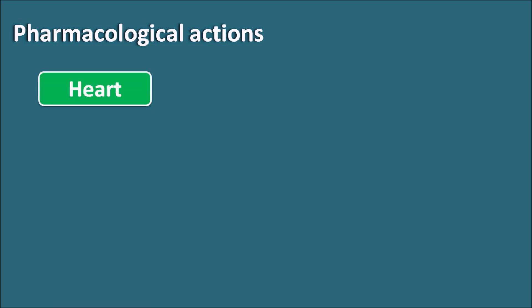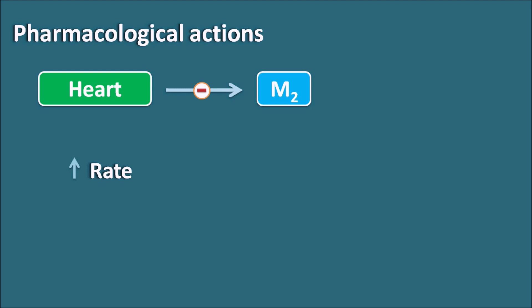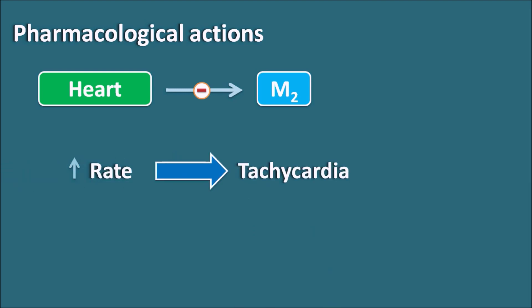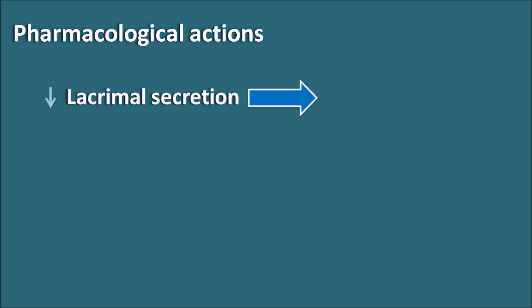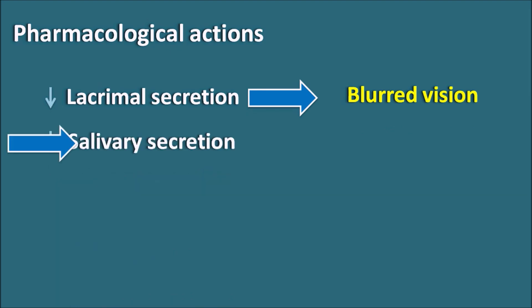Another important organ is the heart. On the heart, M2 receptors are present. Dicyclamine can block these M2 receptors, which results in an increased rate of contraction. So Dicyclamine can produce tachycardia, palpitations, awareness of heartbeat, and tachyarrhythmias because of block of M2 receptors. Dicyclamine can also reduce exocrine secretions — it decreases lacrimal secretion, which may result in blurred vision; decreases salivary secretion, resulting in dry mouth; and can also reduce sweat secretion, which may increase hyperthermia.